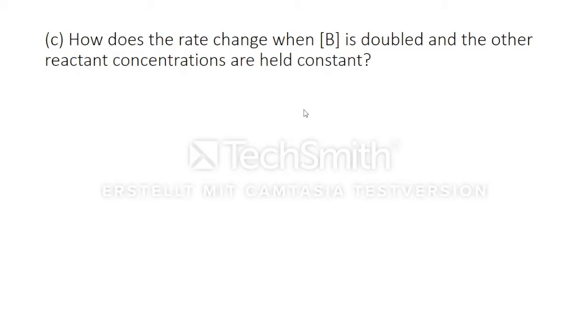Next up, how does the rate change when B is doubled and the other reactant concentrations are held constant? Since concentration B reacts in second order, the factor that doubled B is also squared. And two to the power of two equals four.